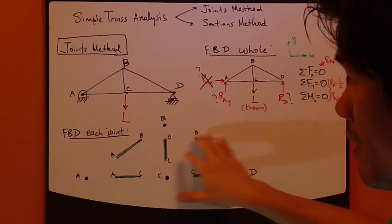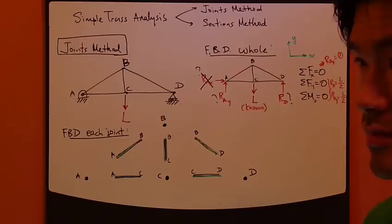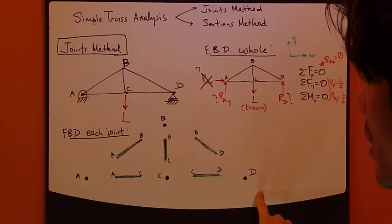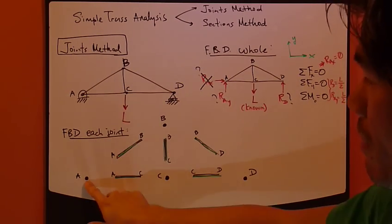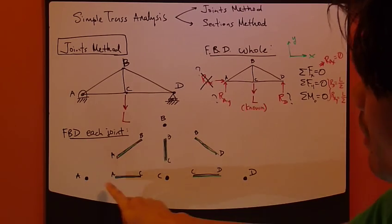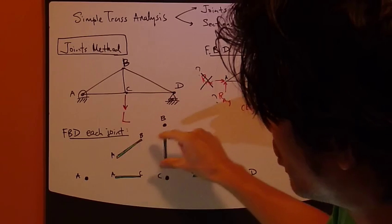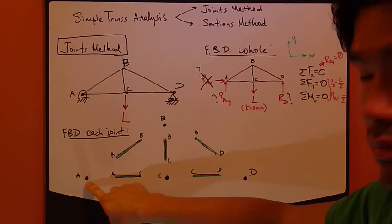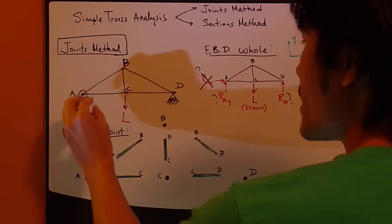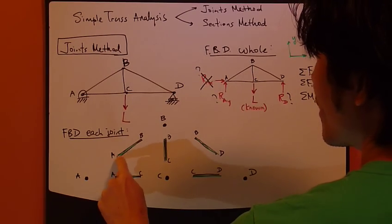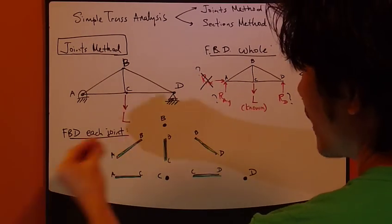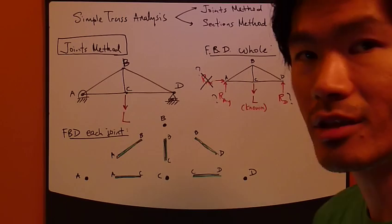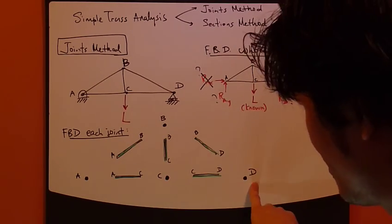These green members are there to help visualize, but I'm not going to use them for the actual joints method analysis. Instead, I'll use the joints themselves: joints A, B, C, and D. Joint A is where members AB and AC meet. I've taken this joint out — freed it up in space — and will just draw that joint. The same applies for joints B, C, and D.